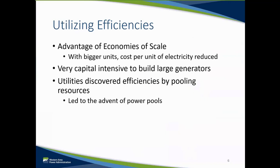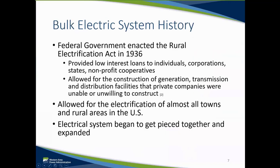As utilities began to construct generation, transmission, and distribution in the most populated areas, there were large areas of the country that were not being electrified because it was not profitable to construct these assets. In order to ensure rural communities weren't left behind, the federal government enacted the Rural Electrification Act of 1936. The Rural Electrification Act allowed individuals, corporations, states, and non-profit cooperatives to access low-interest loans.